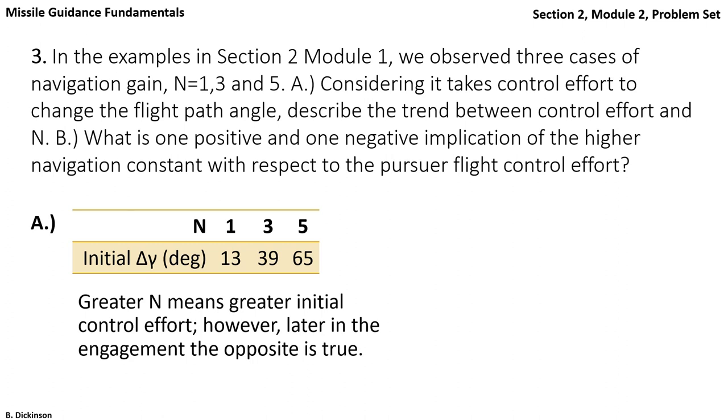So from the sense of overall throughout the engagement, how does N correspond to control effort? That's a different question. And it's not so clear right now. Which navigation constant may provide more or less control effort?